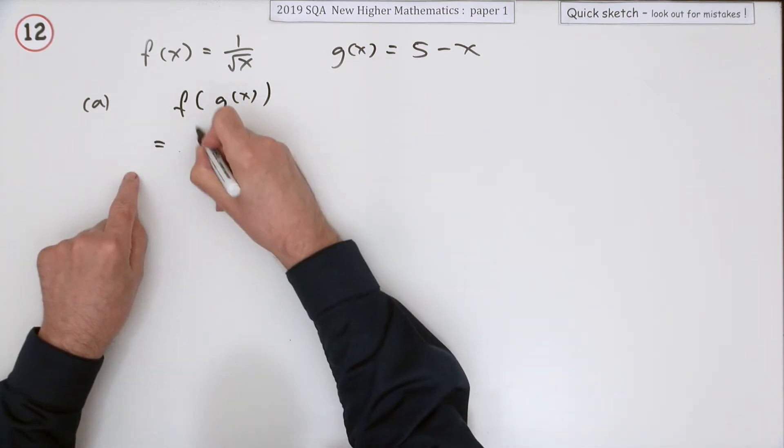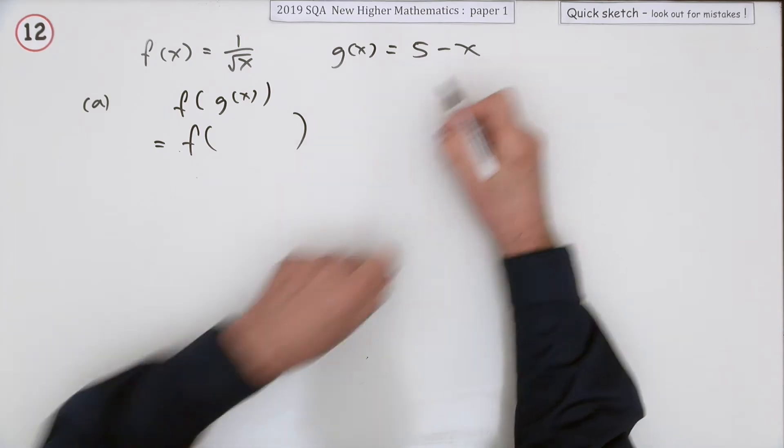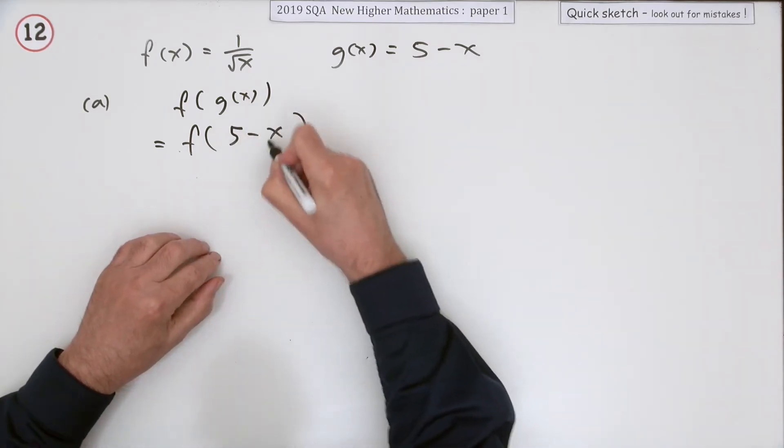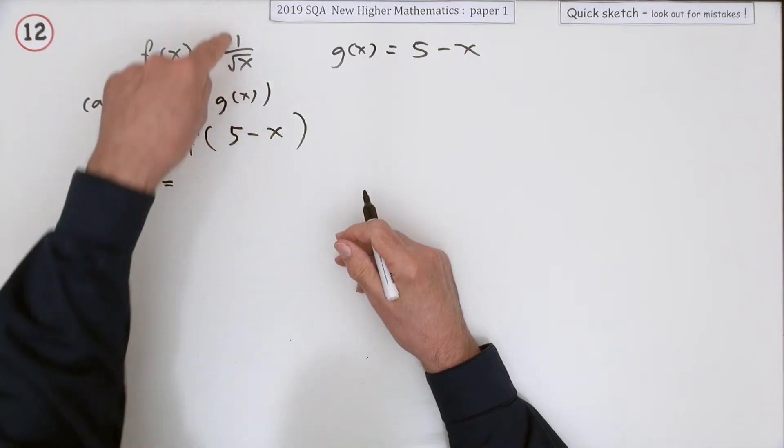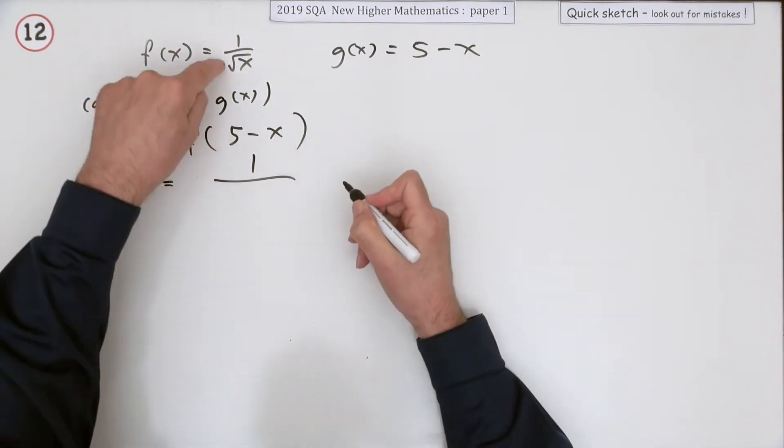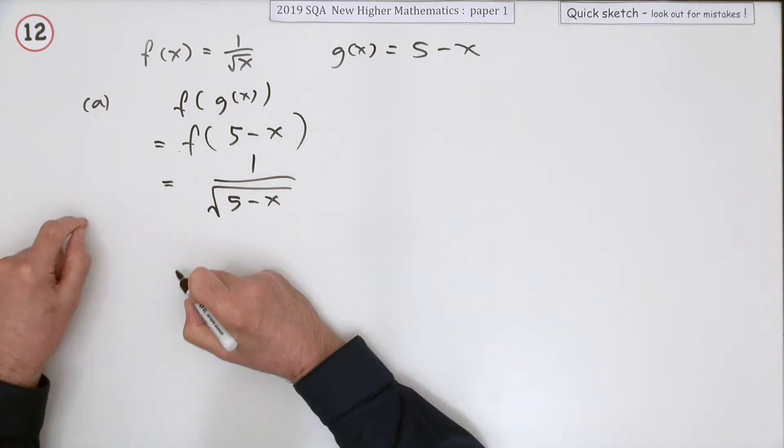Well, f of g of x means the function f is acting on g of x. So I'll pop that in. What does this function do to whatever you feed into it? It does 1 over the square root of whatever you feed in. So 5 minus x.